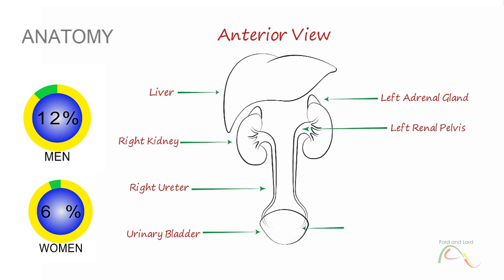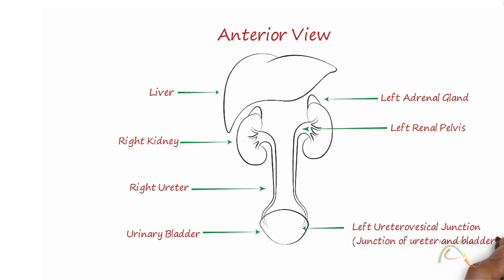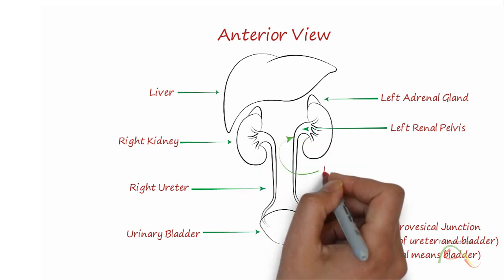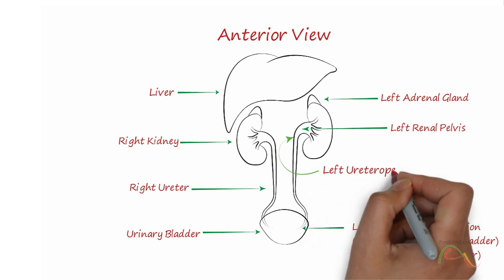Anatomy. The kidneys are located on either side of the spine, in the retroperitoneal space, between the parietal peritoneum and the posterior abdominal wall, well protected by muscle, fat, and ribs. They are roughly the size of your fist. The kidneys have rich blood supply, receiving about 25% of the cardiac output at rest.